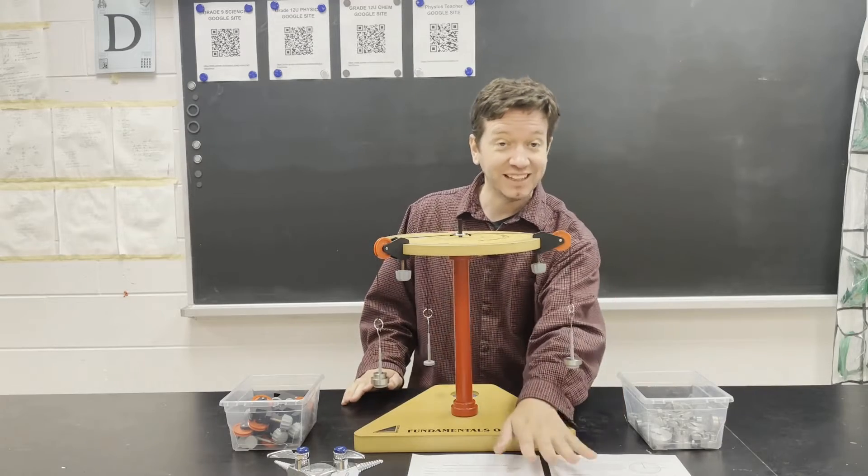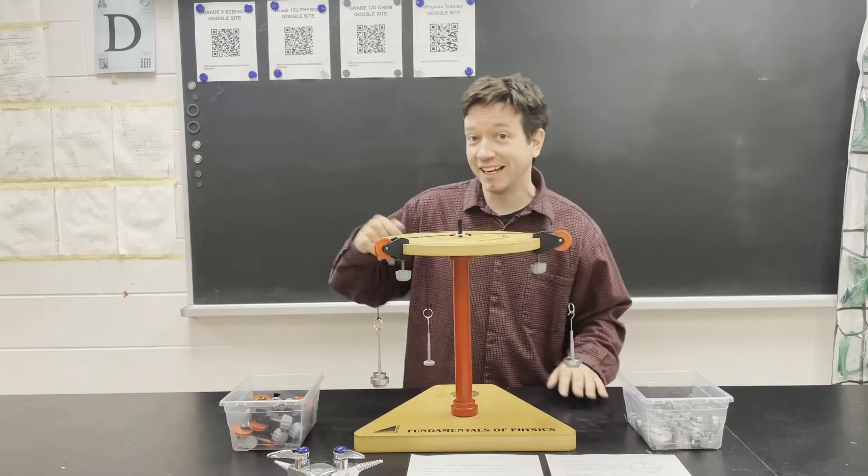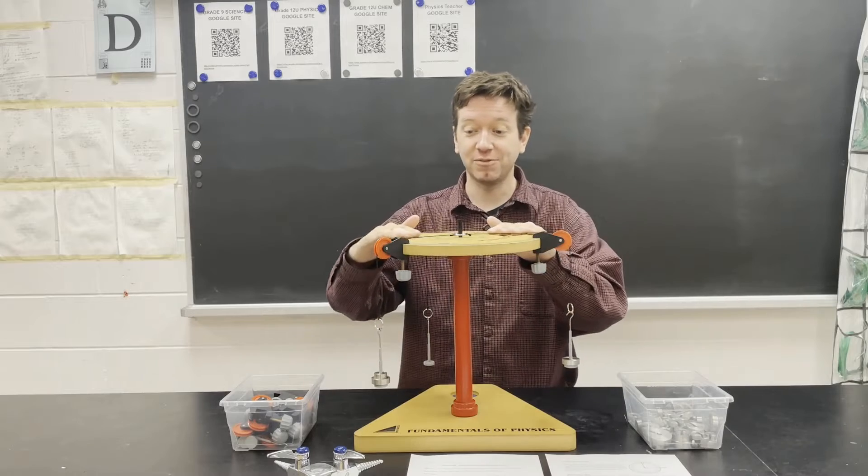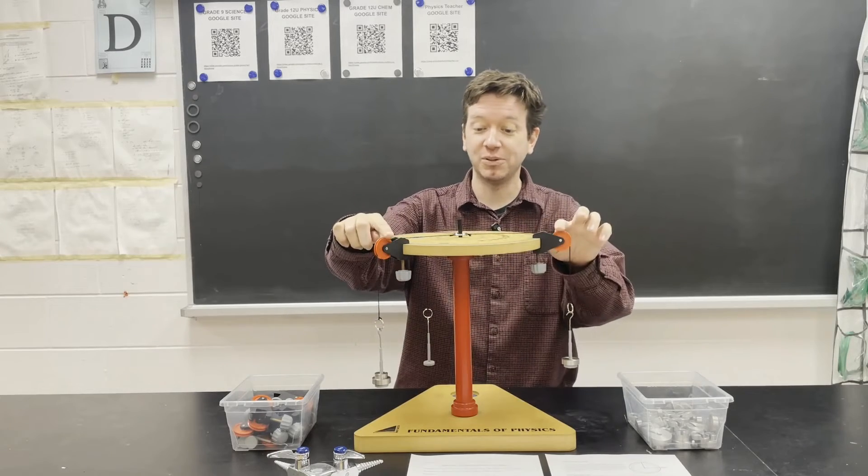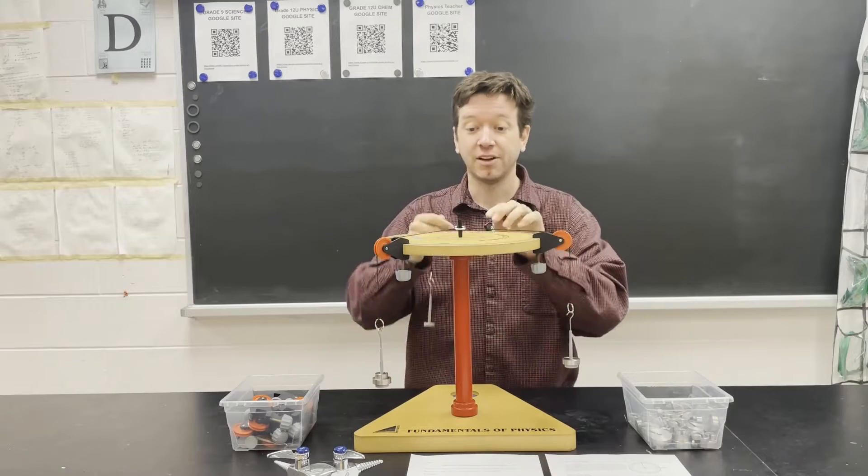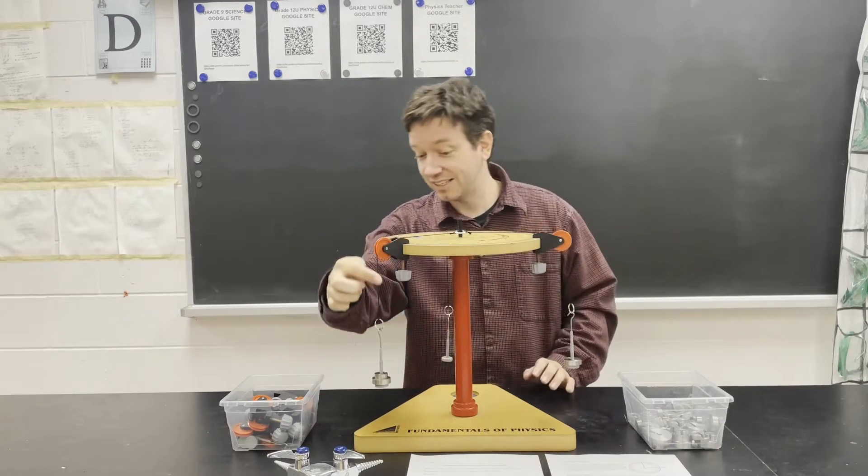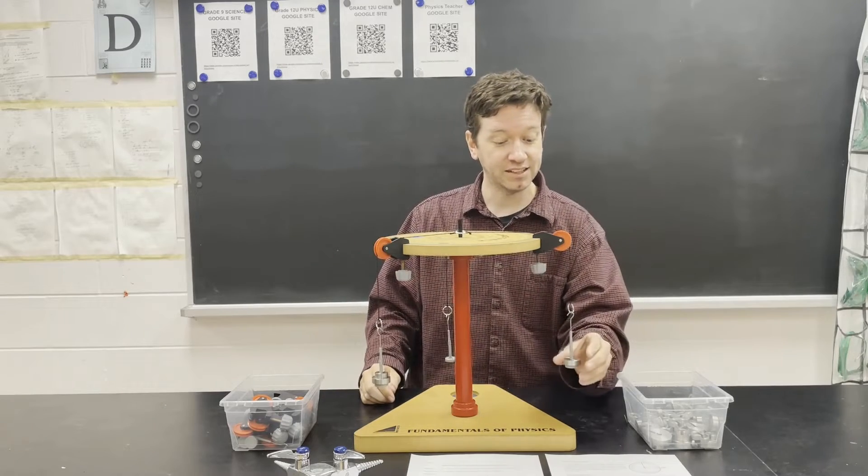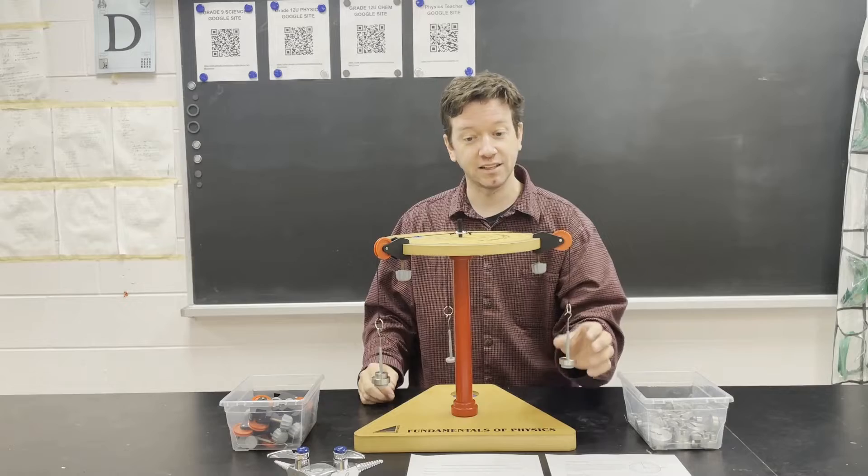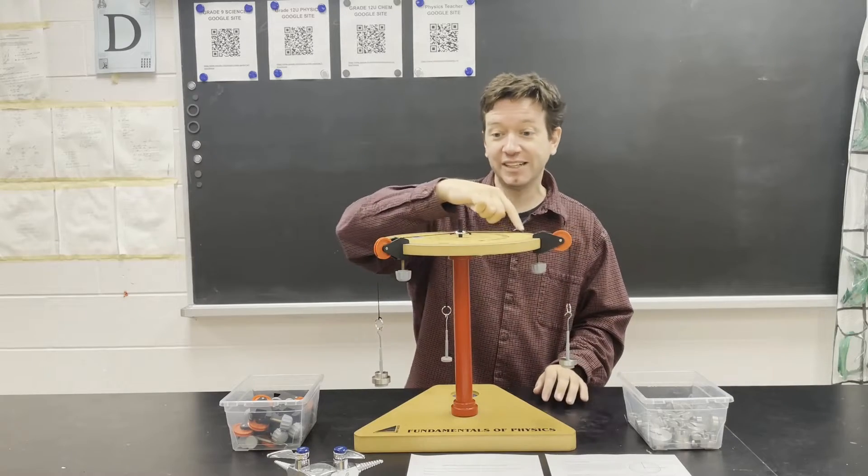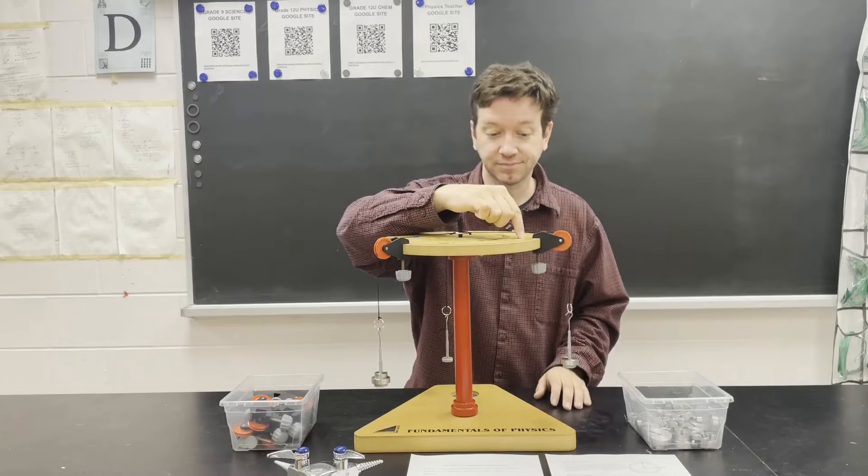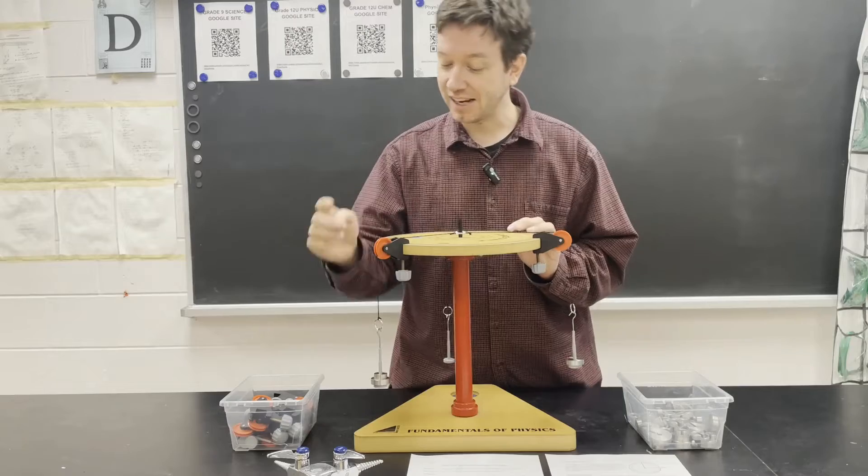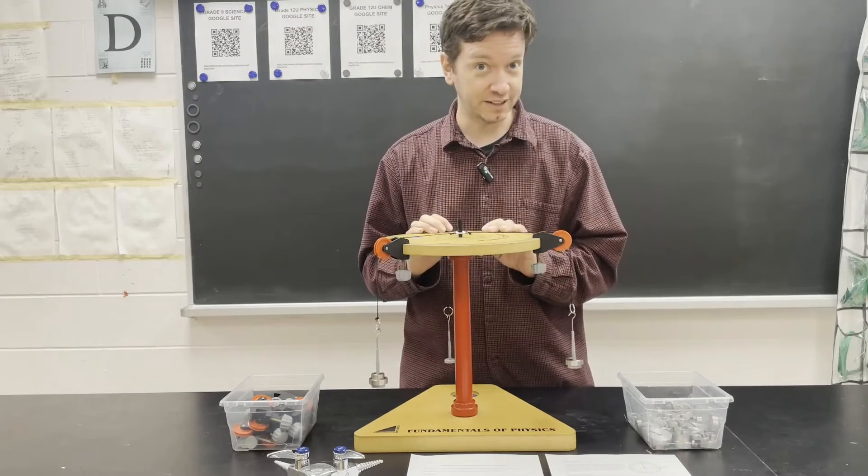If you want to follow along, the lab handout is available for free in the descriptions so you can download that. What we're doing is I have this setup. This is a force table and I have two pulleys here, three strings. This string is attached to 70 grams of mass. This string is attached to 50 grams of mass, and on the force table we have the degrees labeled from 0 to 360. Now the first one which has 50 grams of mass is at 0 degrees and the second one which has 70 grams of mass is at 120 degrees.